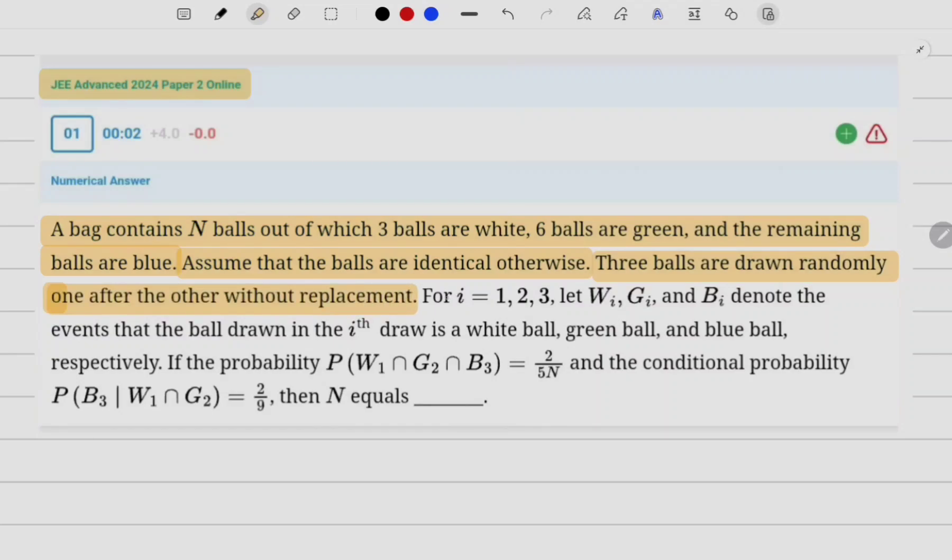For i equal to 1, 2, 3, let Wi, Gi, and Bi denote the events that the ball drawn in the ith draw is a white ball, green ball, and blue ball respectively.